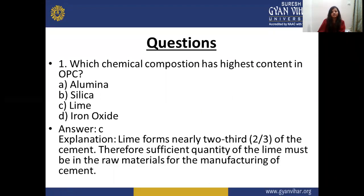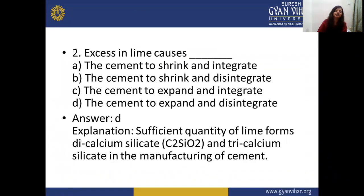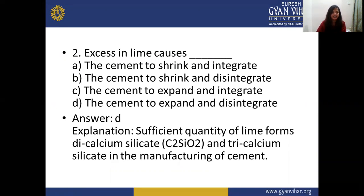Quiz: Which chemical composition has the highest content in OPC? Options: Alumina, Silica, Lime, Iron oxide. The answer is C — Lime. Lime forms nearly two-thirds of the cement; sufficient quality of lime must be in the raw material for the manufacturing of cement. Excess lime causes cement to expand and disintegrate.